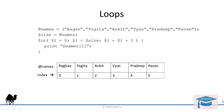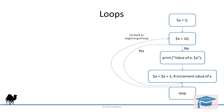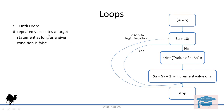Now let's move on to the until loop. The until loop is nothing but the opposite of the while loop. In a while loop it keeps executing as long as the condition is true, but in an until loop it keeps executing as long as the condition is false. It repeatedly executes a statement as long as the given condition is false.